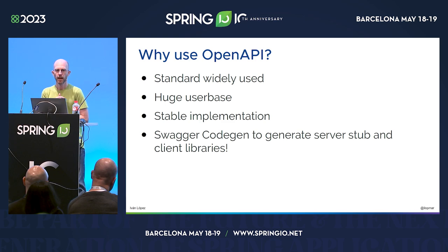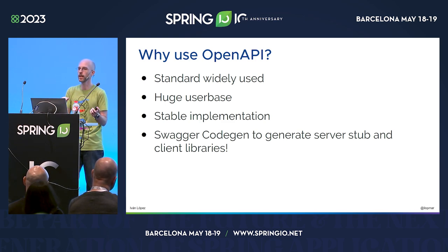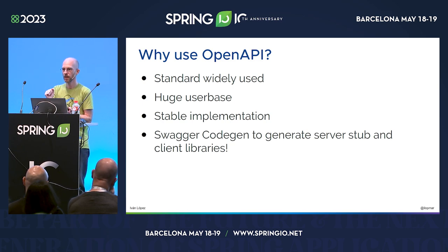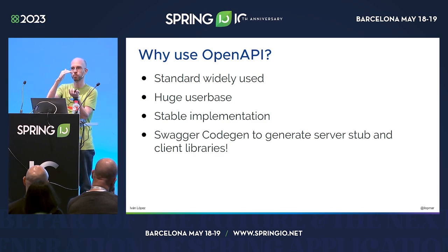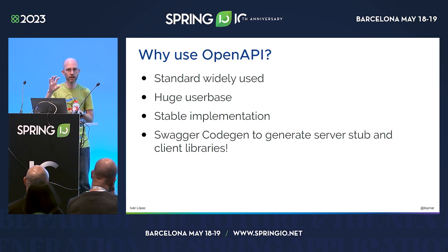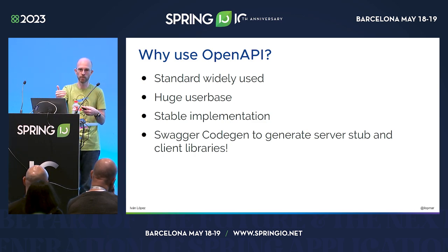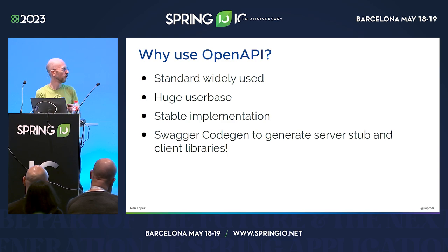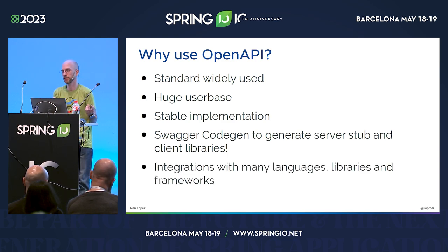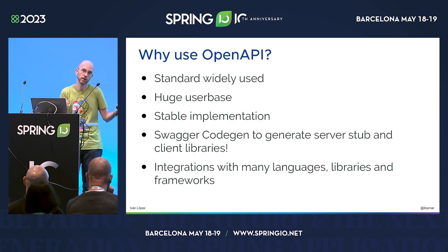As I mentioned, we have tools to generate servers and clients. We can get our OpenAPI and generate the backend server for our Spring applications — with controllers, POJOs, DTOs, and everything — and pretty much only need to put the implementation there. On the other side, we can also generate the client. If you have an OpenAPI for a third-party service or library, you can generate a client to interact with it from Angular, React, Python, Spring, or Java. There are a lot of generator tools for that, and it integrates with many languages.